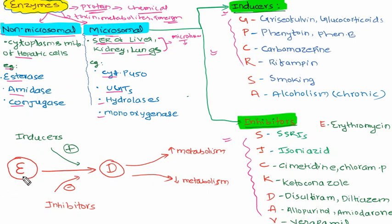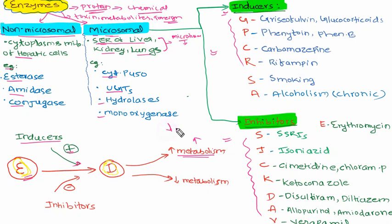The usual mechanism of an enzyme is to metabolize the drug and excrete it. Inducers enhance drug metabolism by inducing these microsomal enzymes. When the enzyme is induced, drug metabolism increases and the drug is excreted faster, meaning the drug's efficacy is decreased — it is essentially wasted by being metabolized and excreted. The main aim of these enzymes is to excrete foreign substances and toxins.